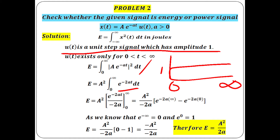The integral of e^(−2at) dt gives e^(−2at)/(−2a), with limit 0 to infinity. Taking −2a outside: upper limit gives e^(−∞) = 0 and lower limit gives e^0 = 1. So 0 − 1 = −1; numerator and denominator are both negative, making it positive. The final answer is energy = A²/(2a).